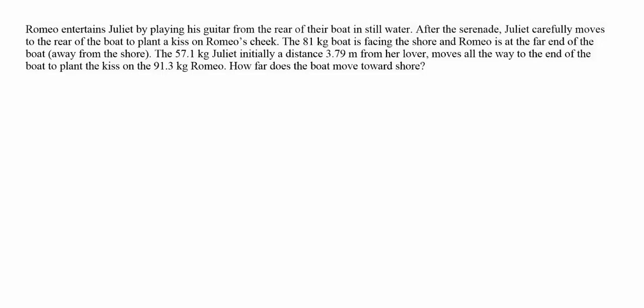In this video, we're going to use the idea that if we have a stationary system of objects, and the net external force acting on that system is zero, then the center of mass of that system stays stationary. The situation we have is Romeo and Juliet sitting in a canoe, and then Juliet moves from one end of the boat over to the same end that Romeo is on. This is going to cause the boat to shift in the water, and we're going to figure out how far the boat moves when this happens.